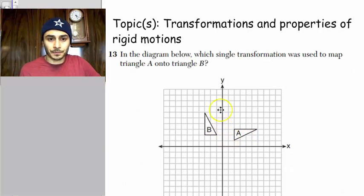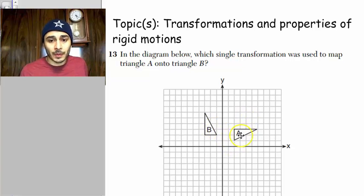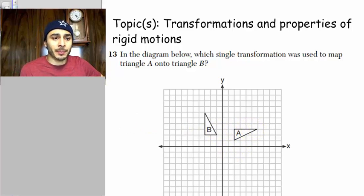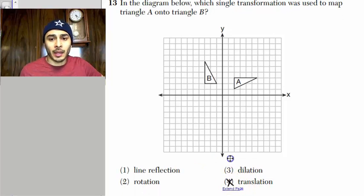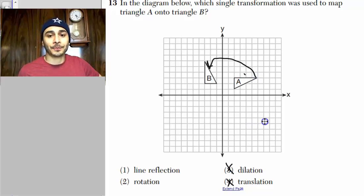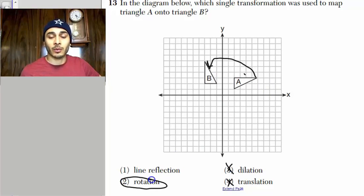Okay, 13. How do we go from triangle A to triangle B? Well, we've been over this already earlier. You can't go from this to that by simply a translation. And a dilation won't do it either. So it's either a line reflection or a rotation. And it's just easier to say all we got to do is just rotate this thing 90 degrees counterclockwise, and then we get B. So the answer is a rotation.